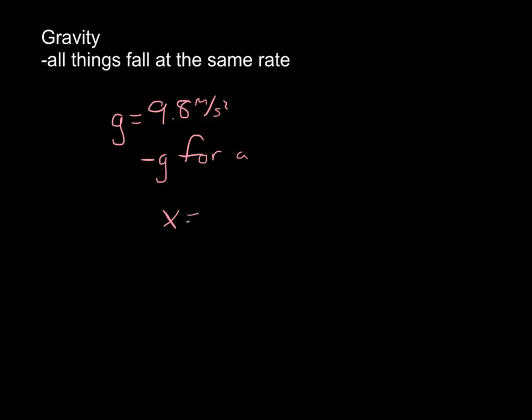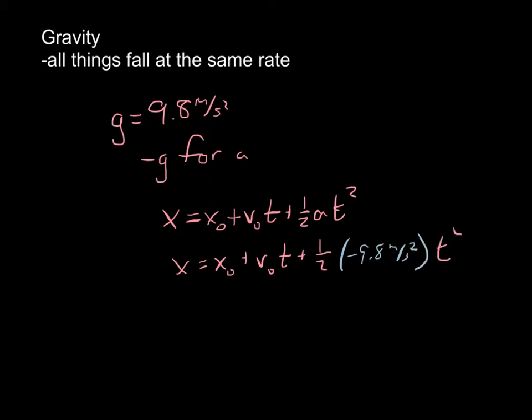So for example, in our equation x equals x naught plus v naught t plus one half a t squared, we're simply going to write x equals x naught plus v naught t plus one half. Now our new value, negative 9.8 meters per second squared times time squared. So we're just substituting that value in for a any time we're near the surface of the earth. So if we're working a problem and it says near the surface of the earth or we drop something or anything along those lines, you can immediately substitute that negative 9.8 meters per second squared in for a.